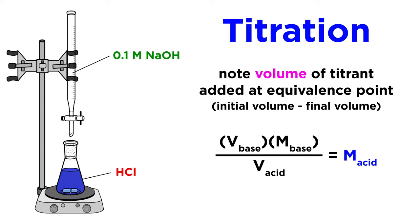As we already know, the volume of base added multiplied by its concentration over the volume of acid will give us the concentration of our acid. In this type of experiment, we generally perform three titrations for our concentration determination to be more accurate. The average of the three numbers will give us a solid estimate for the concentration of the acid analyte.